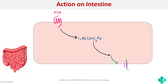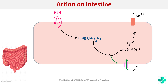Vitamin D causes increased calcium reabsorption from the intestine and also increases the calcium-binding protein calbindin, which transports calcium out of the cell via a pump mechanism. Vitamin D3 also has the ability to produce increased phosphate reabsorption from the intestine.